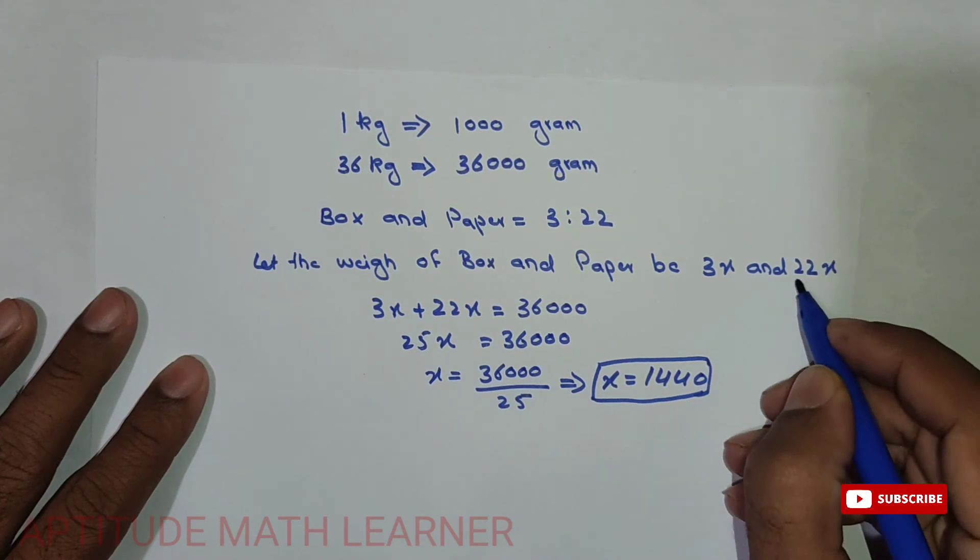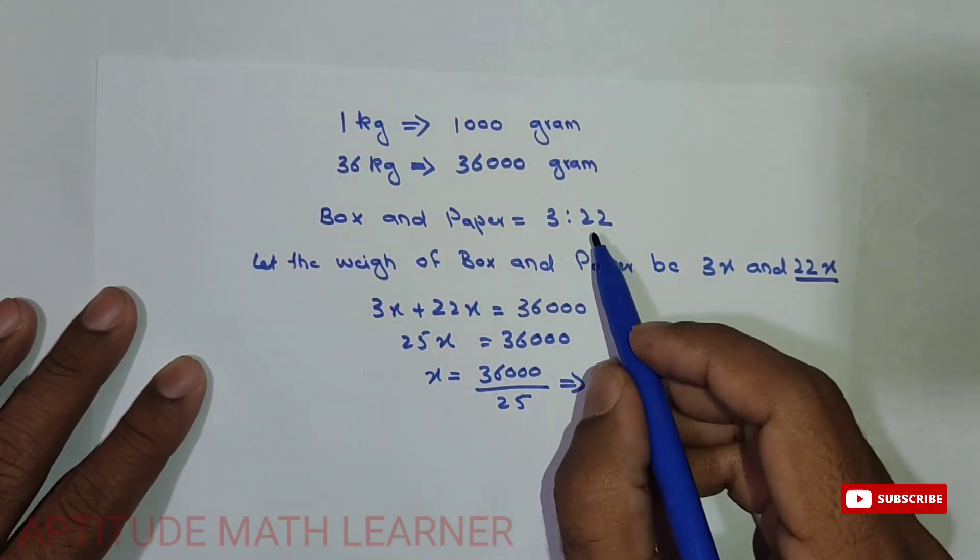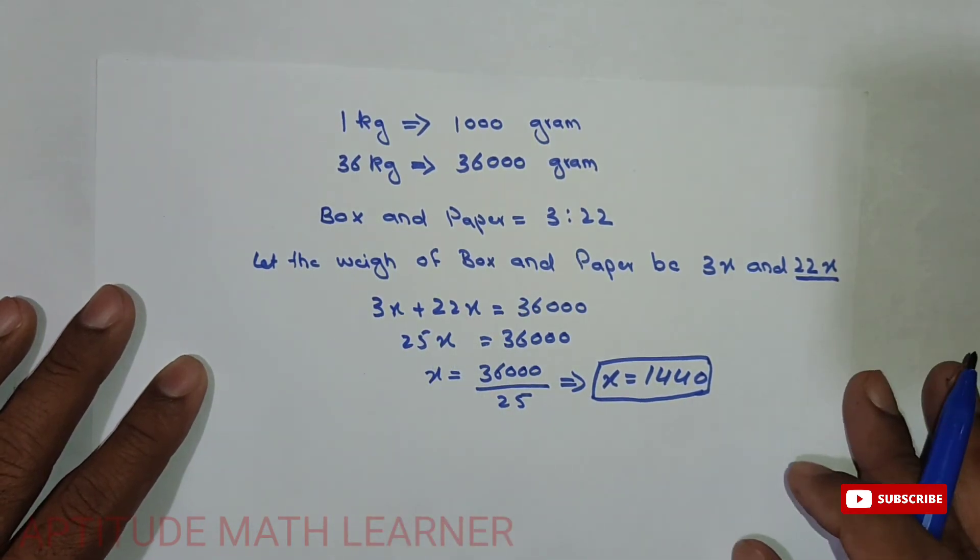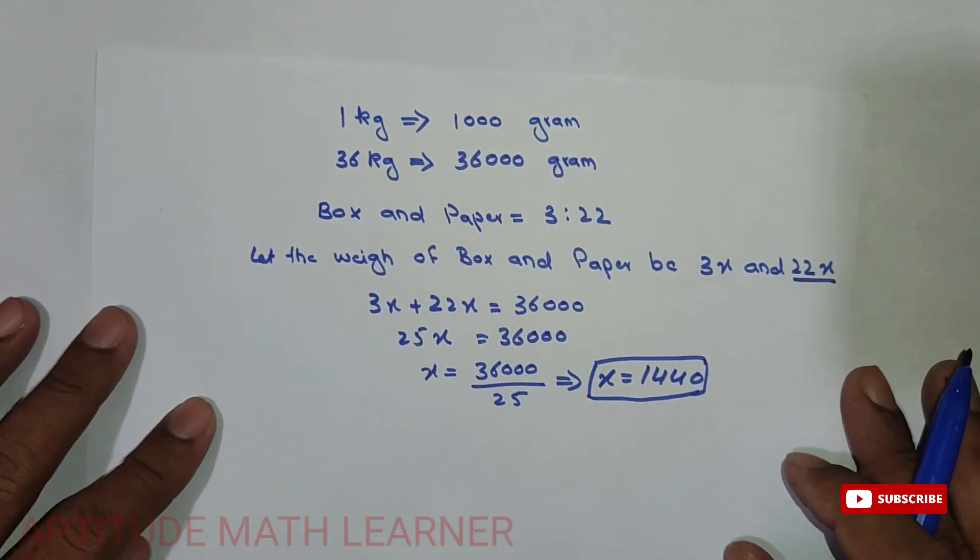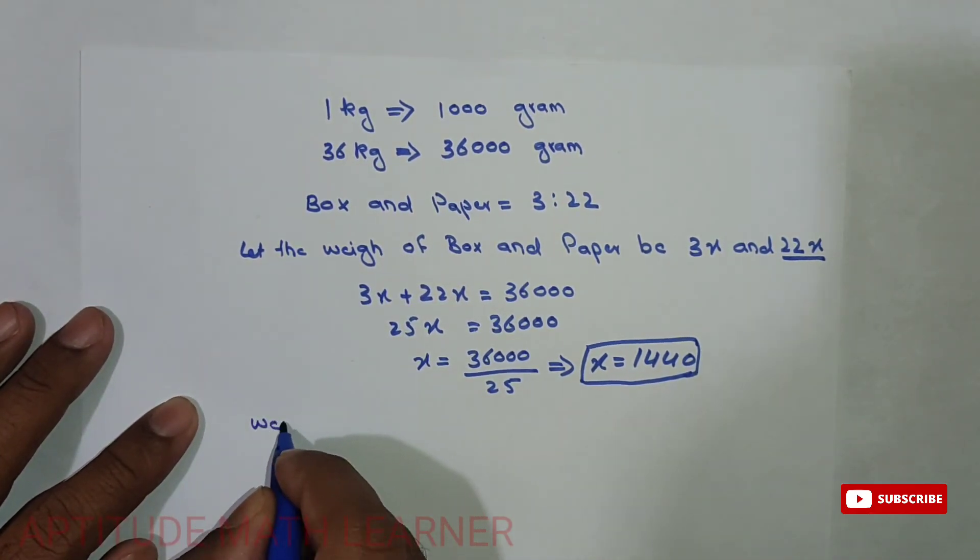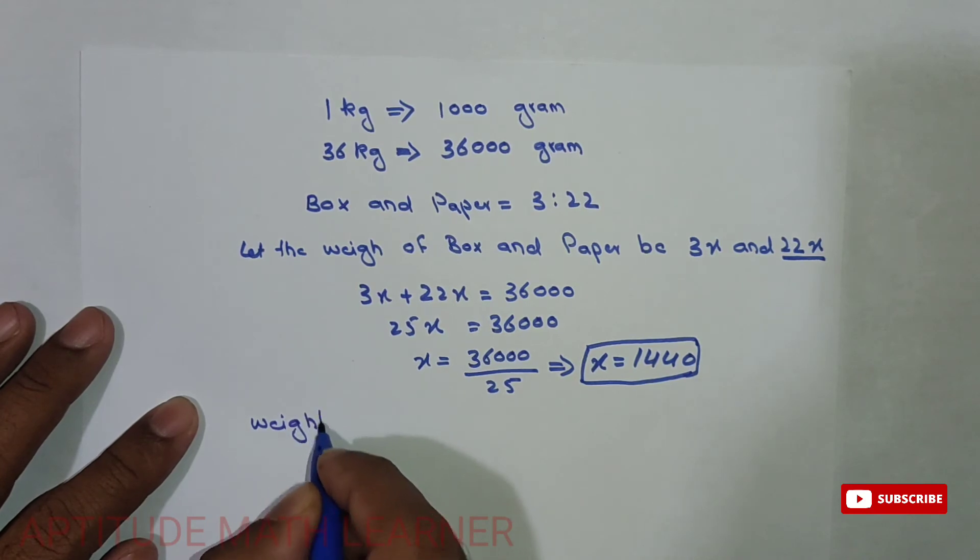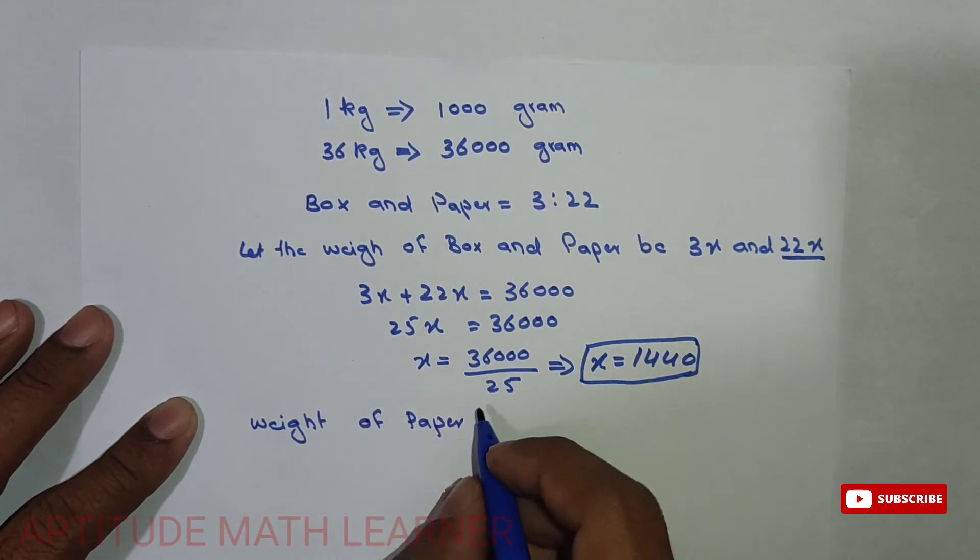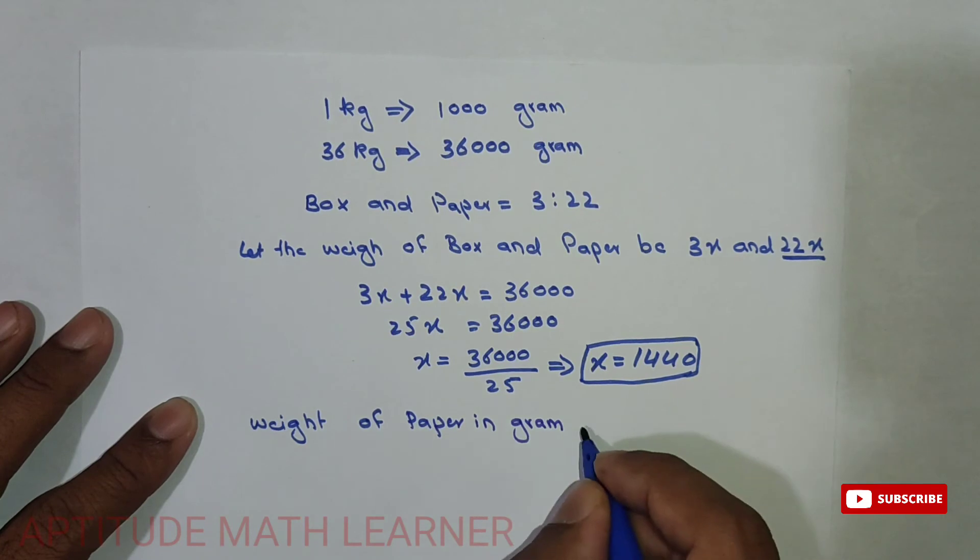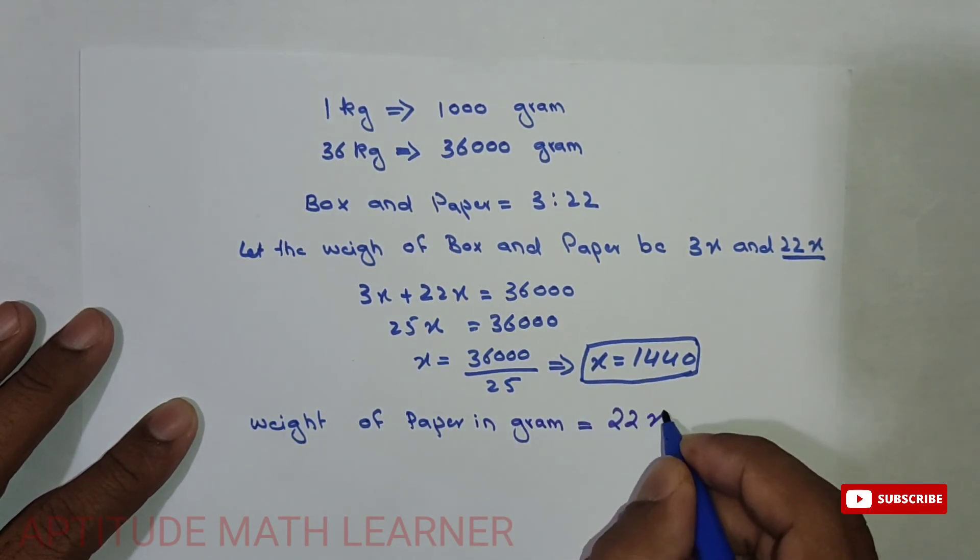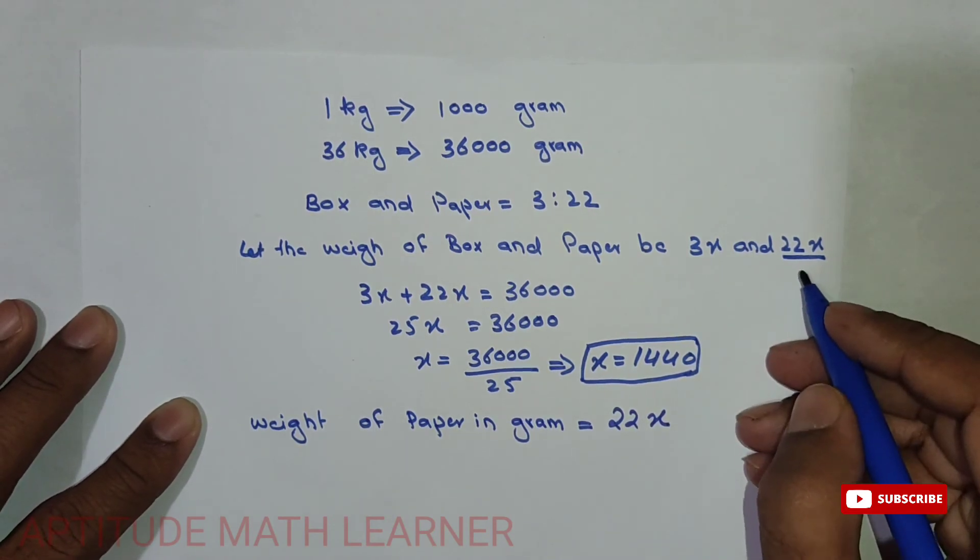So weight of the paper in grams, that is 22x. This is the ratio - if you see, 22x, we have supposed the weight of the paper in grams. So we get the answer, that is weight of paper in grams. So we are expressing it in grams, that is 22x.